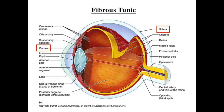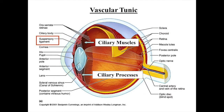The outermost coat of the eyeball is the fibrous tunic, composed of dense avascular connective tissue. It has two obviously different regions: the sclera, which is seen anteriorly as the white of the eye, and the cornea, which is the anterior, transparent, crystal-clear window that lets light enter the eye and is also a major part of the light-bending apparatus. The vascular tunic forms the middle coat of the eyeball and has three regions: the choroid, the ciliary body, and the iris. The choroid is a blood vessel-rich membrane that forms the majority of the vascular tunic, and its blood vessels nourish all eye layers.